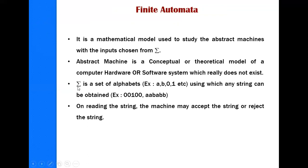Sigma is a set of alphabets. In normal English, alphabets means A, B, C, D through Z. Whereas in Automata Theory, alphabets can be letters like A, B, Z, or even digits. Sigma is a set of alphabets using which any string can be obtained.